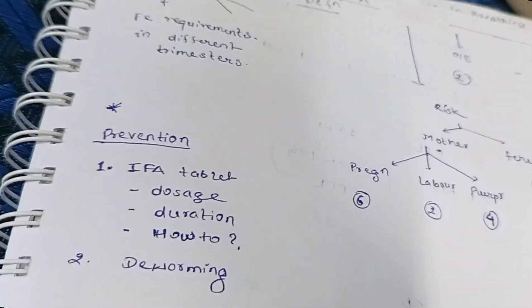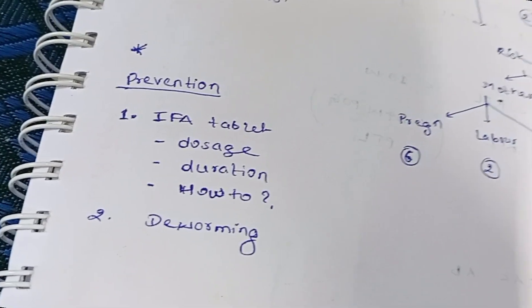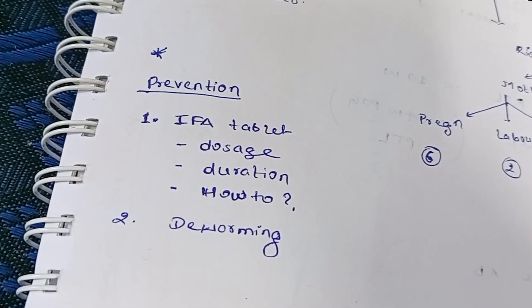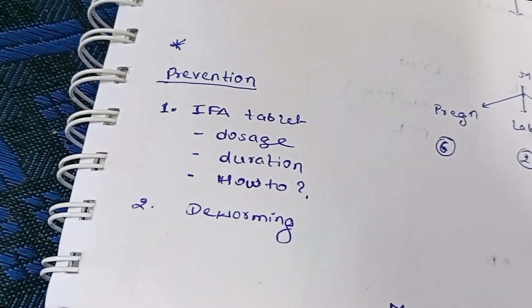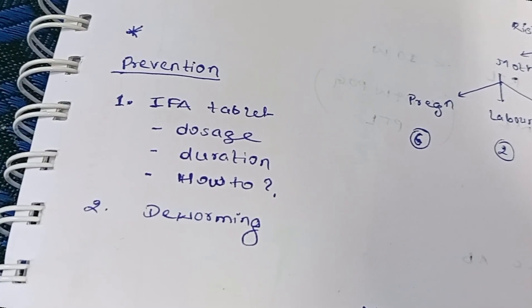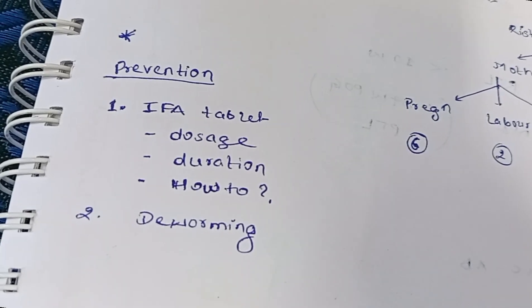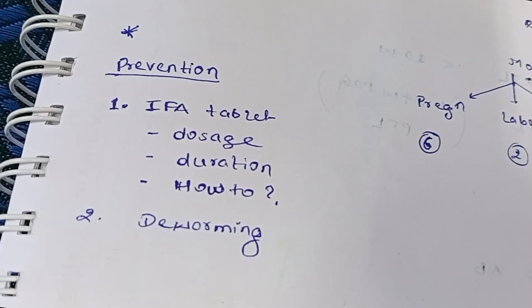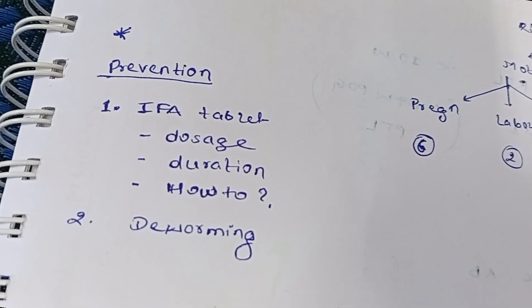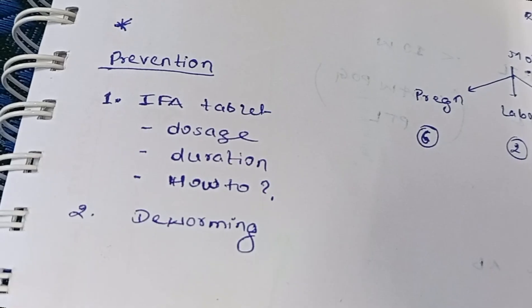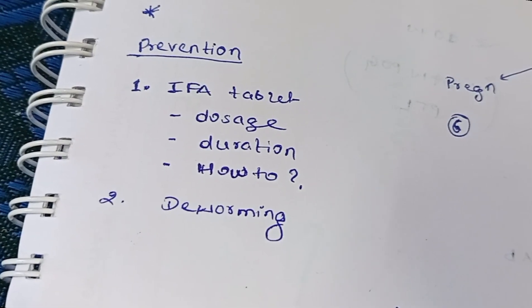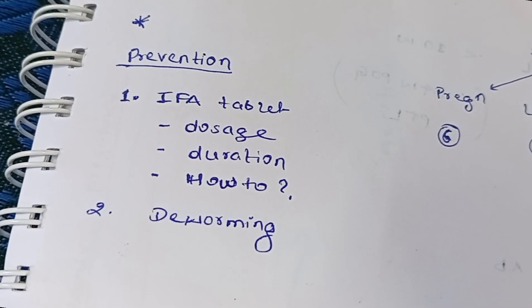For prevention, iron folic acid tablets should be given: 60 milligram iron sulfate and 0.5 milligram folic acid. The duration is six months during pregnancy and six months after pregnancy. Vitamin C increases iron absorption. Iron and calcium tablets should not be given simultaneously — at least a two-hour gap should be maintained. Tea and coffee also decrease iron absorption.